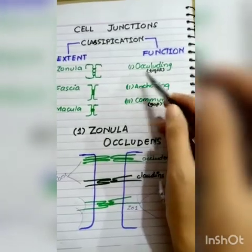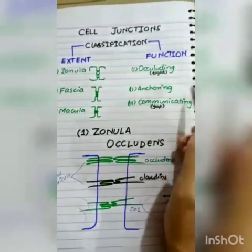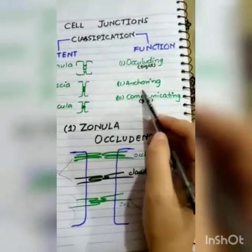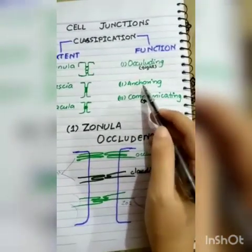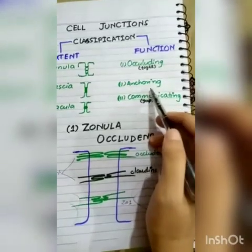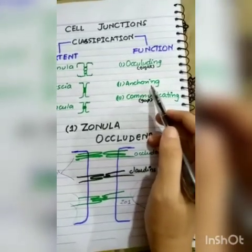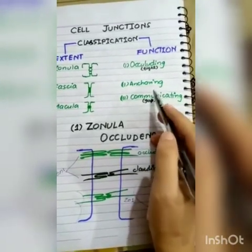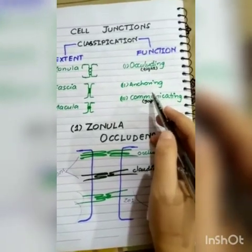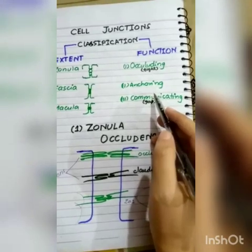Anchoring junctions hold both cells anchored together. They have four types: zonula occludens, zonula adherens, macula adherens, and others.